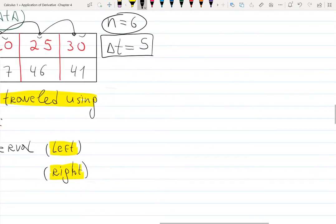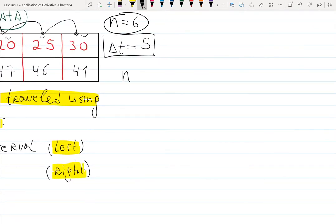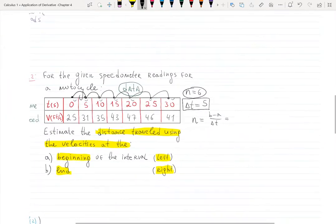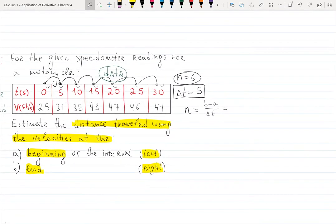If you have delta t, then by the formula we can actually calculate n. n is b minus a over delta t. What is my b? b is the last endpoint, that's 30. Then a is zero. We're dividing by five, and we're getting the same six we had by calculating by hand.